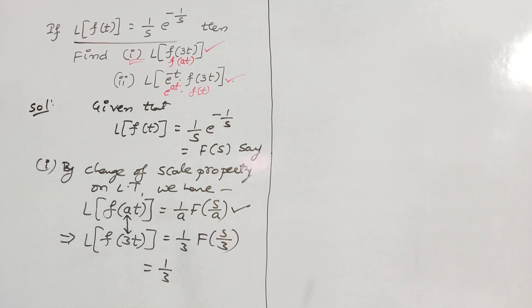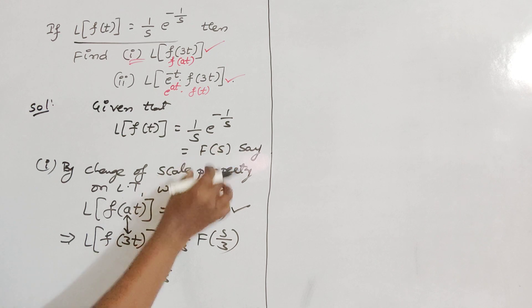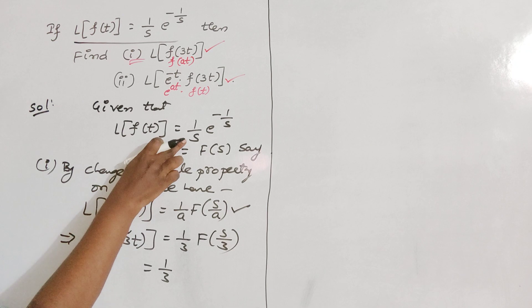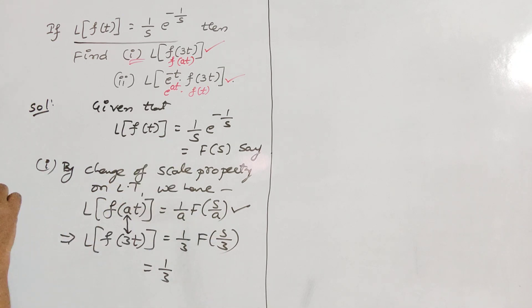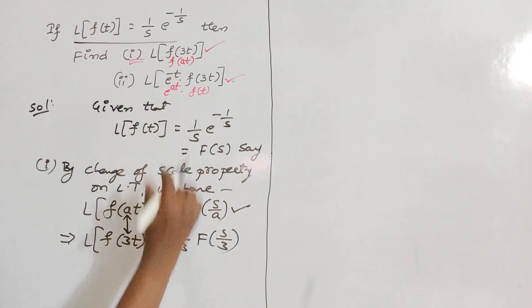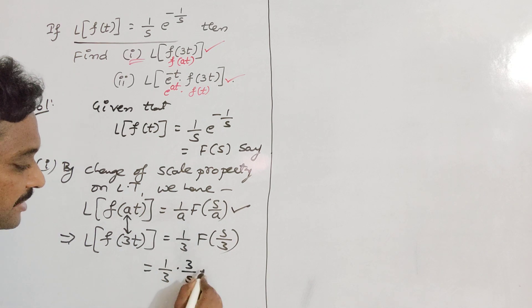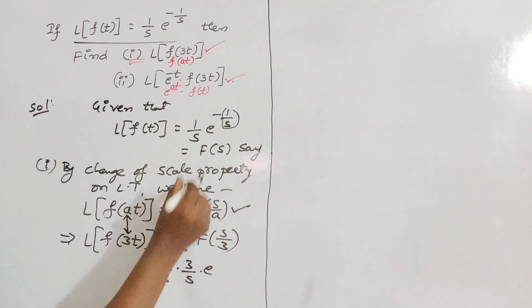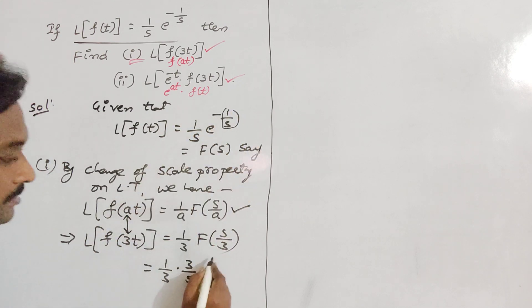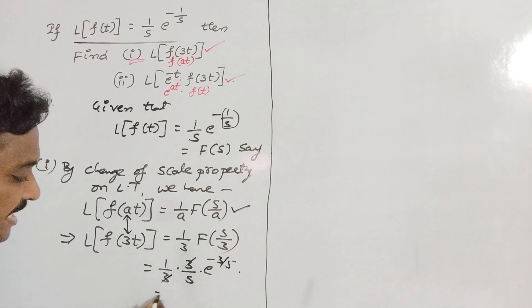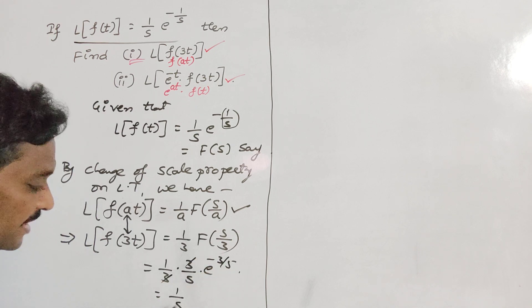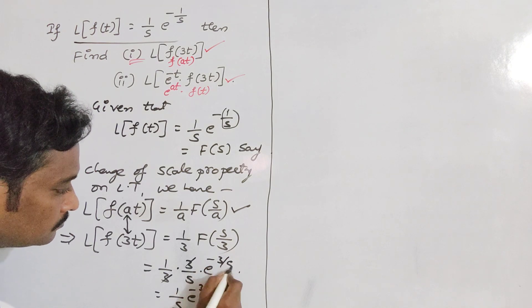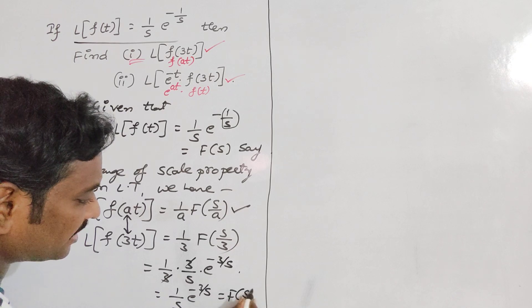So the result is 1 by 3 times F of s by 3. Now in the given F of s, wherever we have s, we replace it by s by 3. We have 1 by s in the denominator, so s becomes s by 3, giving us 3 by s. In the exponent we also have 1 by s, so replacing s by s by 3 gives 1 divided by (s by 3), which is minus 3 by s. Therefore the result is 1 by s times e to the power minus 3 by s.